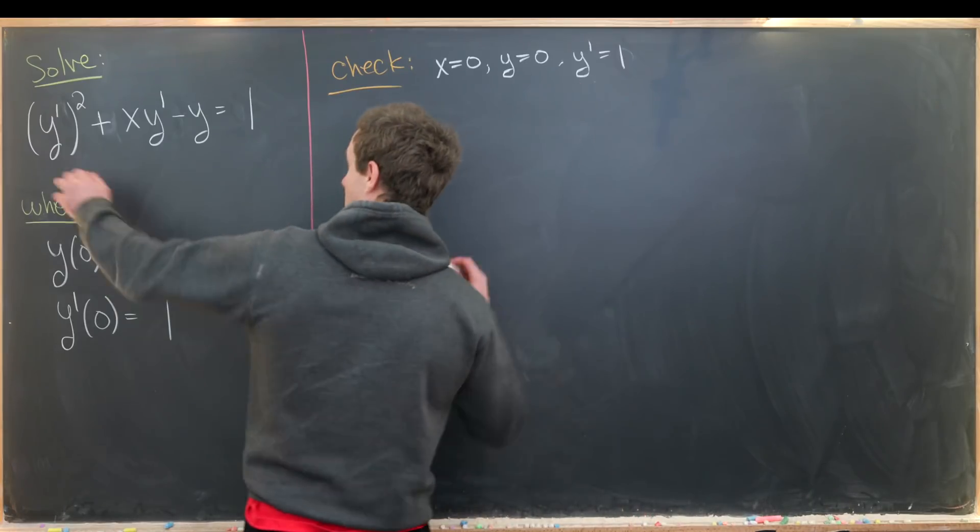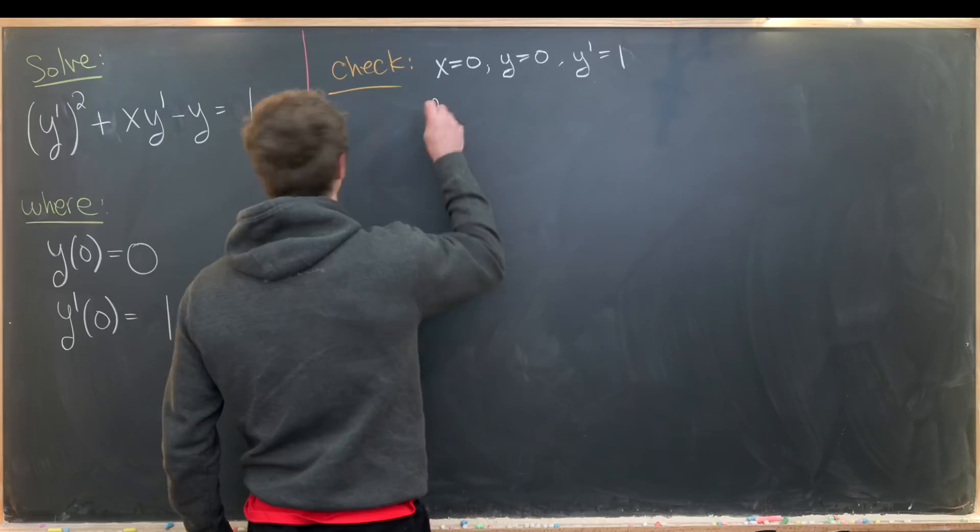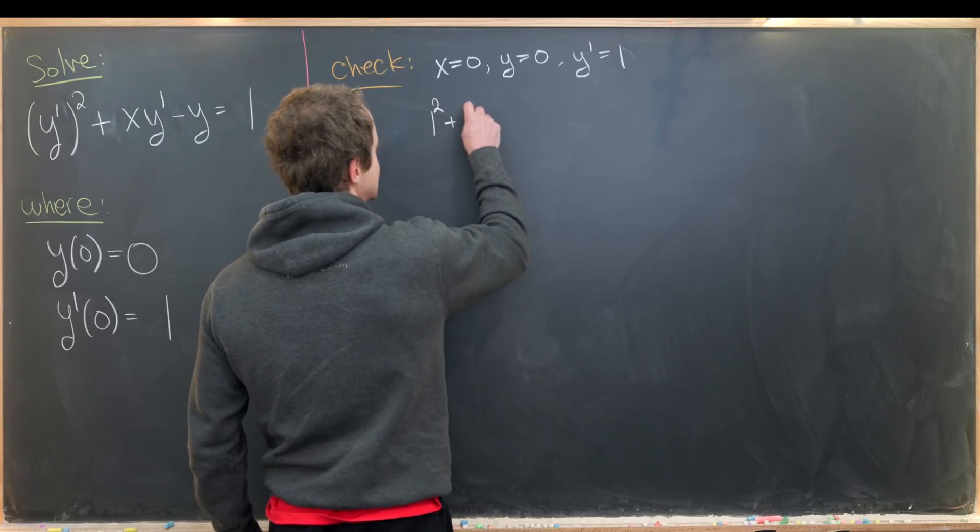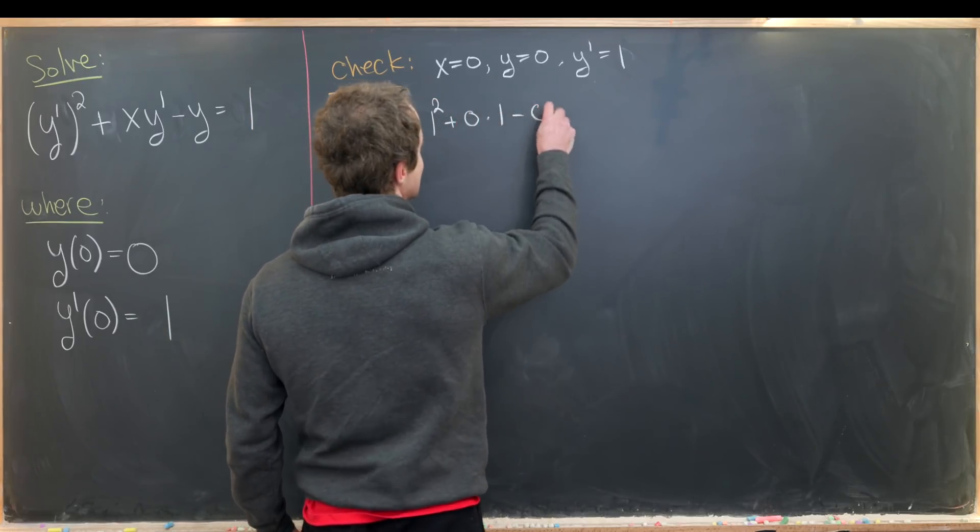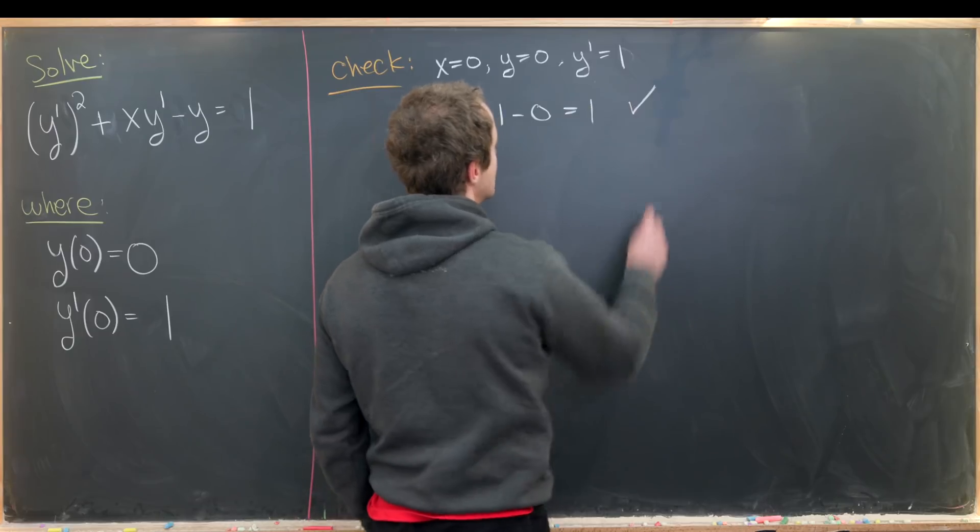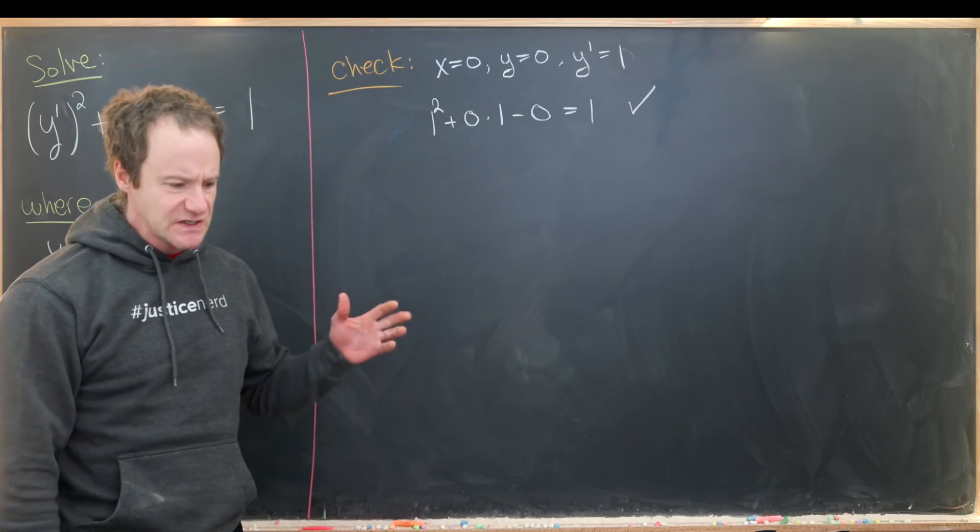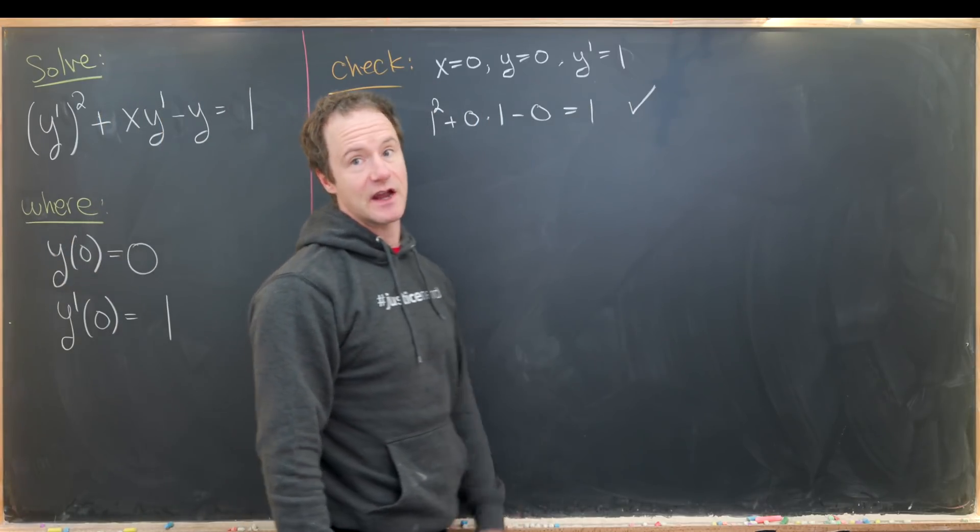If we plug in y' = 1, we'll get 1 squared, and then we have plus 0 times 1 minus 0 that equals 1, so we're okay. This checks out, we can at least get off the ground.